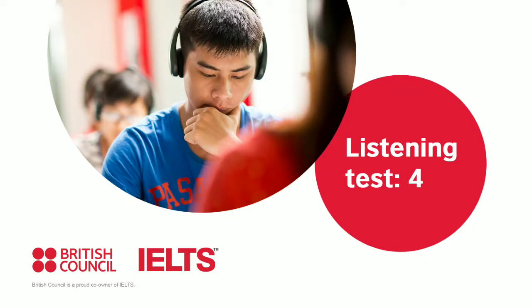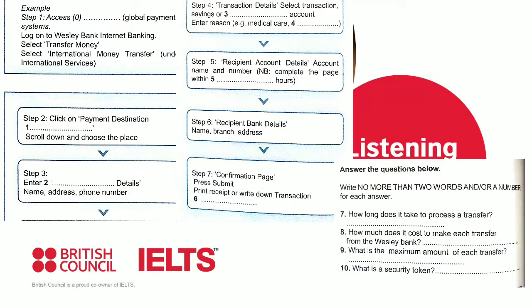Now turn to Section 1. You will hear a telephone conversation between a bank representative and a client who wants to make an international money transfer. First you have some time to look at questions 1 to 6. You will see that there is an example that has been done for you. On this occasion only, the conversation relating to this example will be played first.